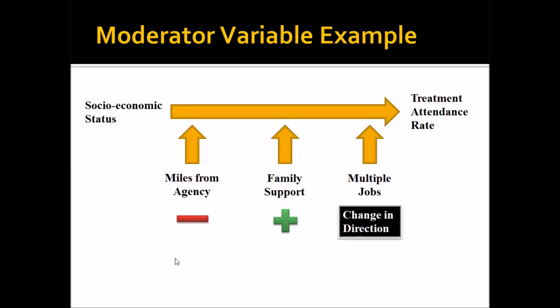There are three moderator variables to consider, each with different possibilities. The first is miles from agency — how many miles the client has to travel to the appointment. As miles increase, the treatment attendance rate may tend to decrease. This is a moderator variable: as miles from agency increases, the strength of the relationship weakens.